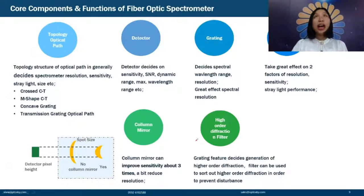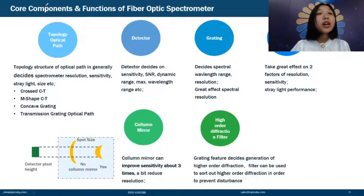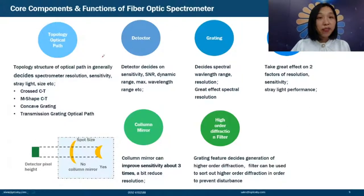The last factor is stray light — harmful light that must be considered and eliminated. These six factors are what product managers consider when configuring a spectrometer. Next, we introduce the core components and functions in detail.